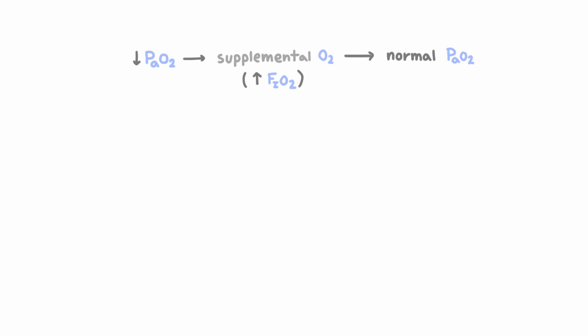Sometimes we quantify hypoxemia using the ratio of the partial pressure of oxygen in the arterial blood to the inspired oxygen concentration, which is expressed as a decimal. In a healthy person, this ratio is between 300 and 500 millimeters of mercury.